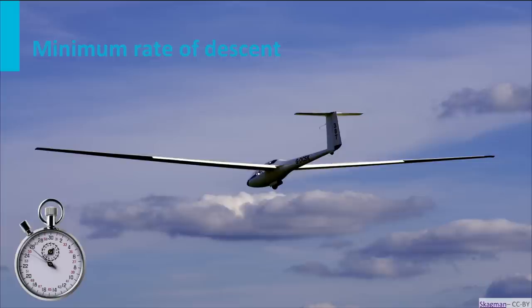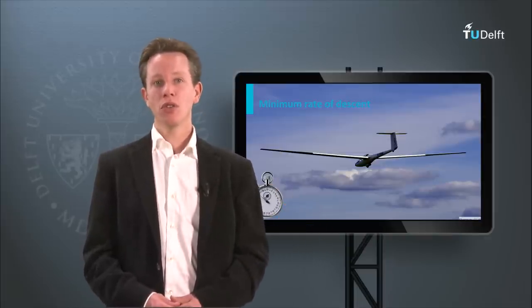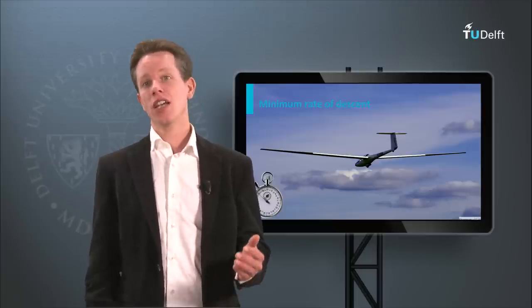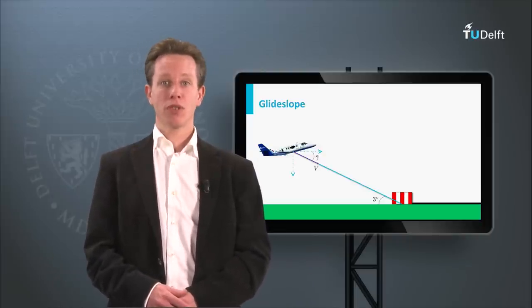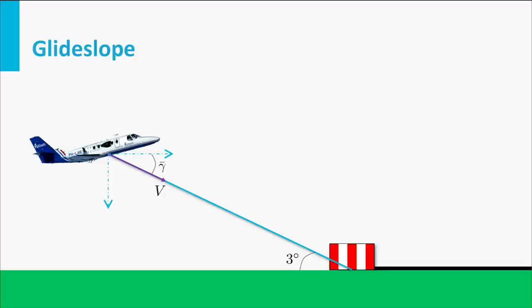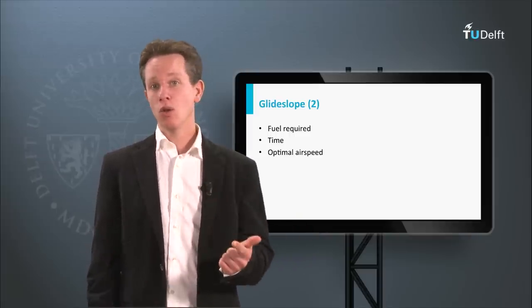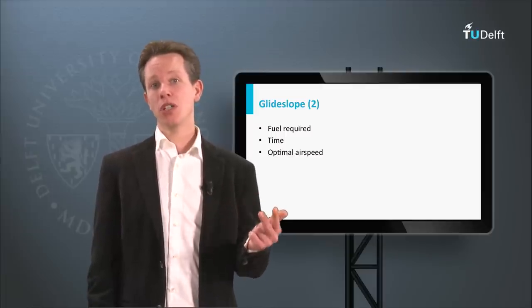Or what is the minimum rate of descent, resulting in the longest time before the aircraft reaches the ground? The examples just mentioned are all extreme scenarios, but not too long from now you will also be able to calculate aircraft performance for typical trajectories executed every day near airports around the world. When an aircraft approaches an airport for landing, it will typically descend along a 3-degree glide slope with engines fully operational. The airline must know beforehand how much fuel will be burned during the complete descent, how long it will take, and at which airspeed the aircraft should fly and with which engine power setting.